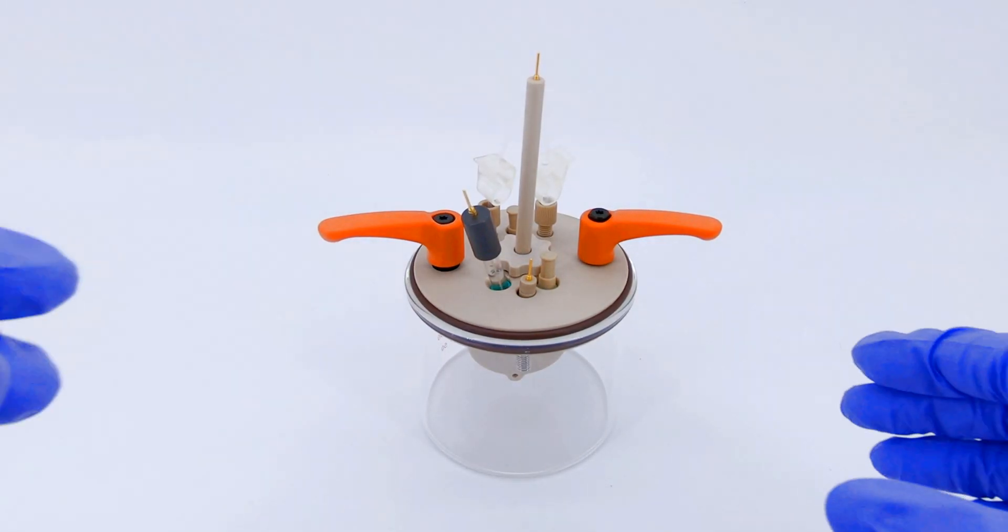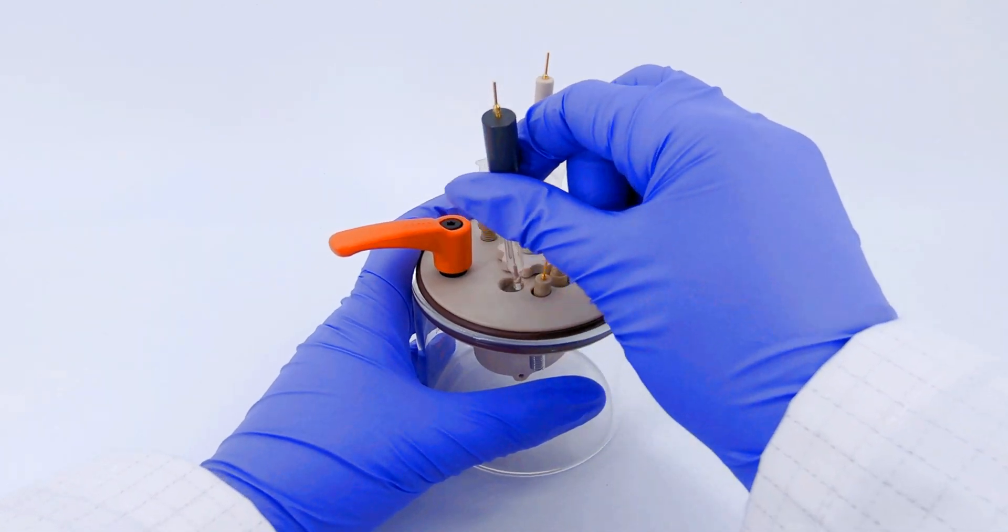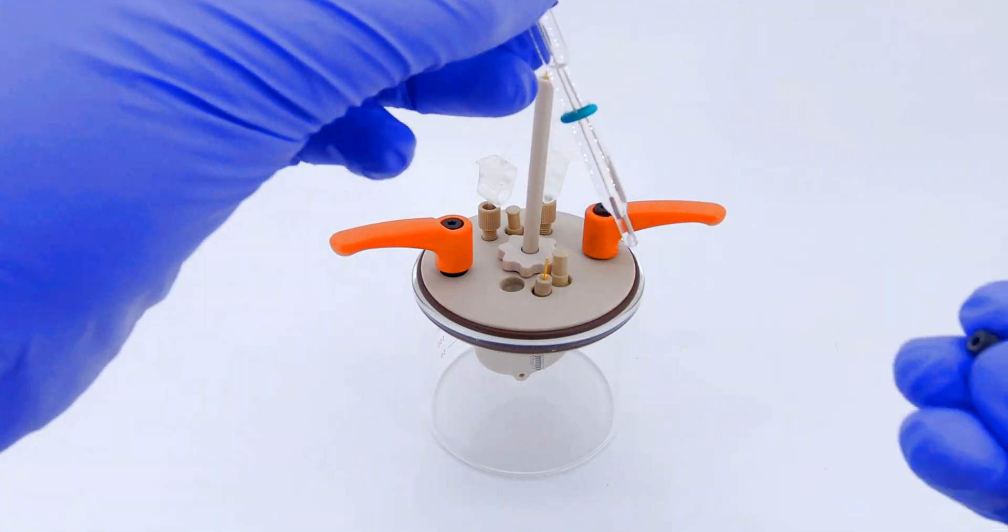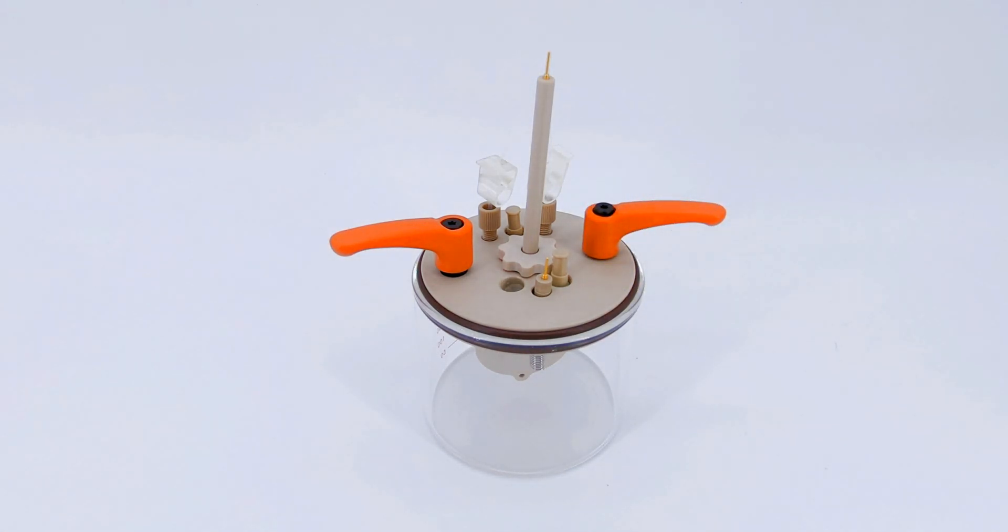Now let's disassemble. Pull the reference electrode out by twisting slowly until the reference electrode and the o-ring come out. Replace the cap immediately after washing to ensure the longevity of the electrode.